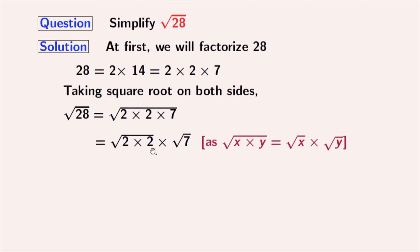Now from the first square root, we get 2 and second square root, that is square root of 7, remains the same. In the first square root, we used square root of a times a is equal to a. Here, a is 2.